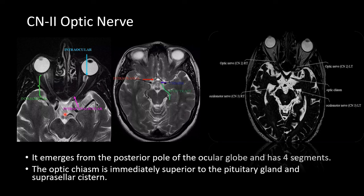From the optic chiasm, the optic tract courses posteriorly along the cerebral peduncles and synapses at the lateral geniculate nuclei. From there, optic radiation reaches the primary visual cortex in the occipital lobe. Here is a FIESTA image showing the segments of the optic nerve and the optic chiasm.